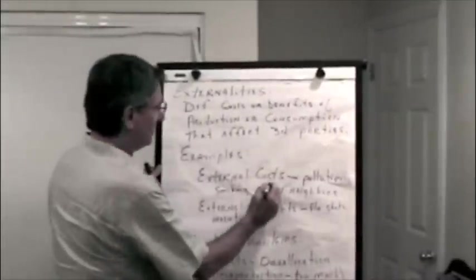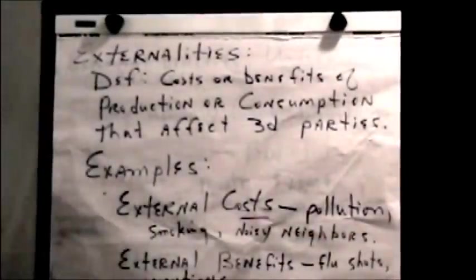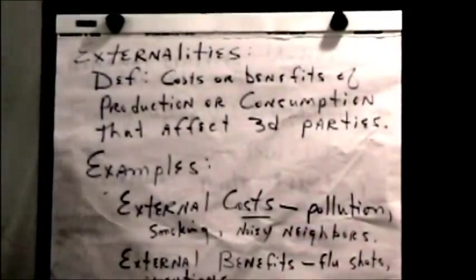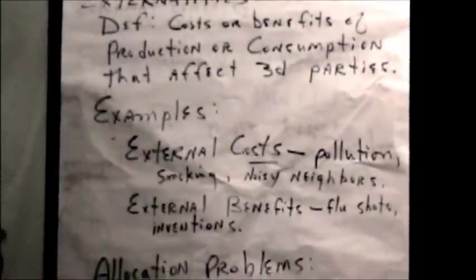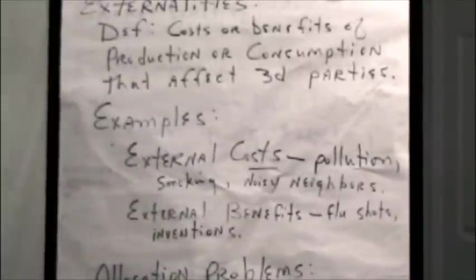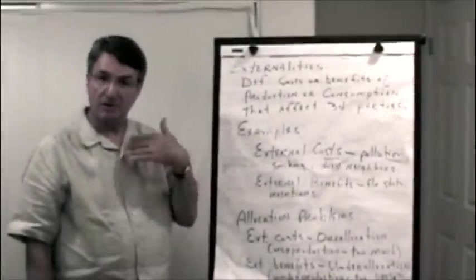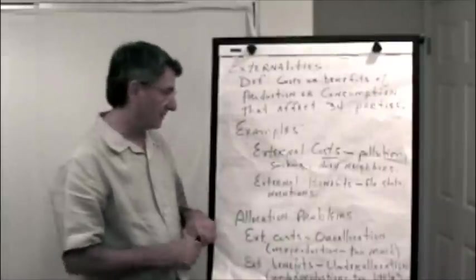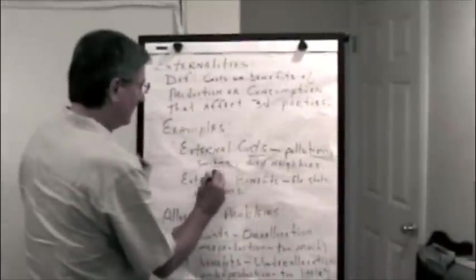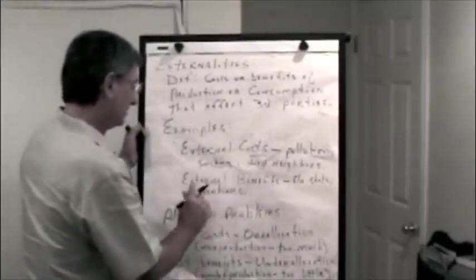Examples. Examples of external costs are pollution. If I own a factory and I get to blow smoke on my neighbors or dump waste water into the local river, I get to dump some of the costs of my production onto third parties who have nothing to do with my production. Smoking, noisy neighbors, rotten noisy neighbors, the ones nearby actually.